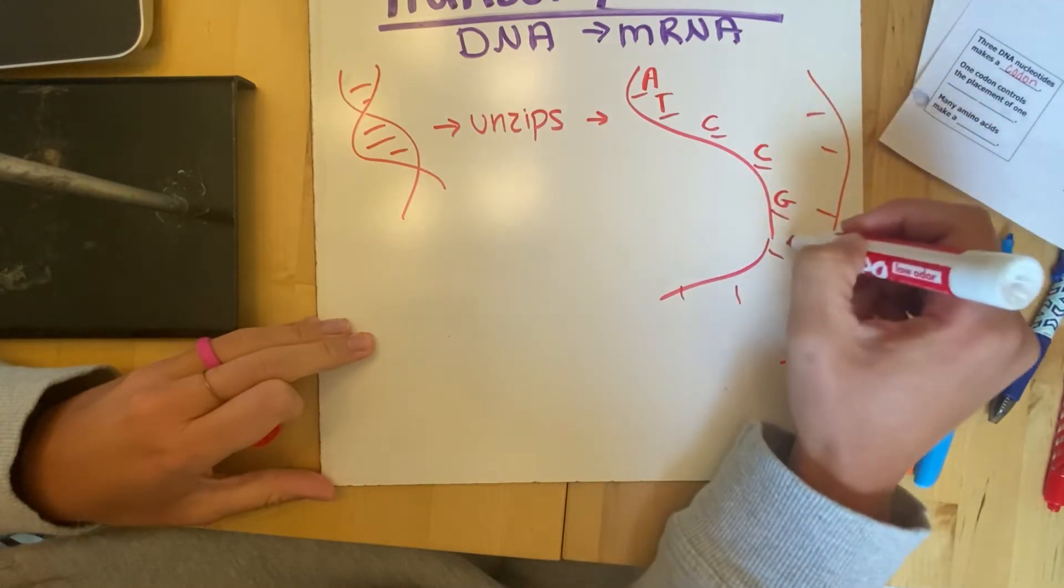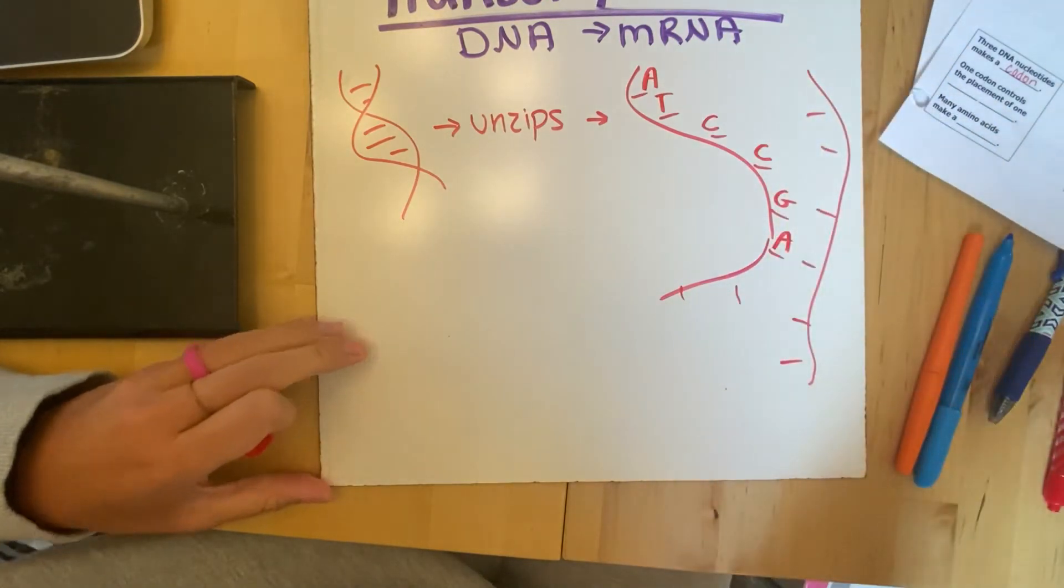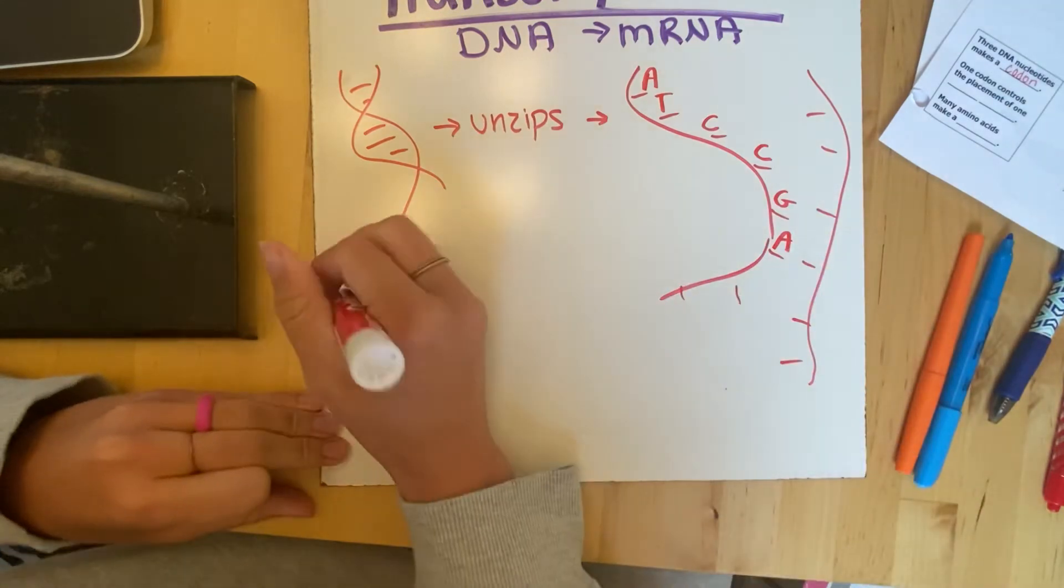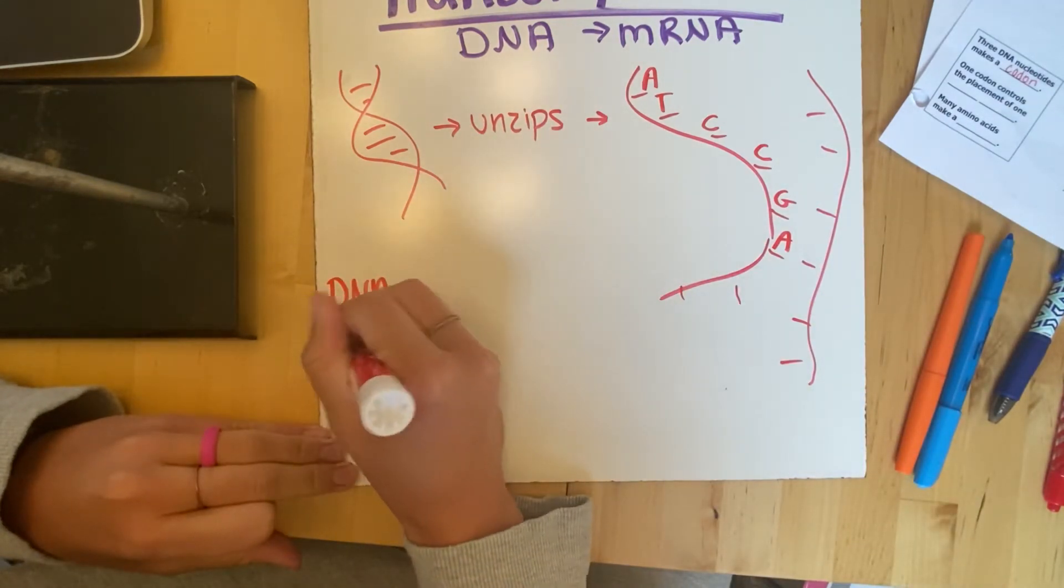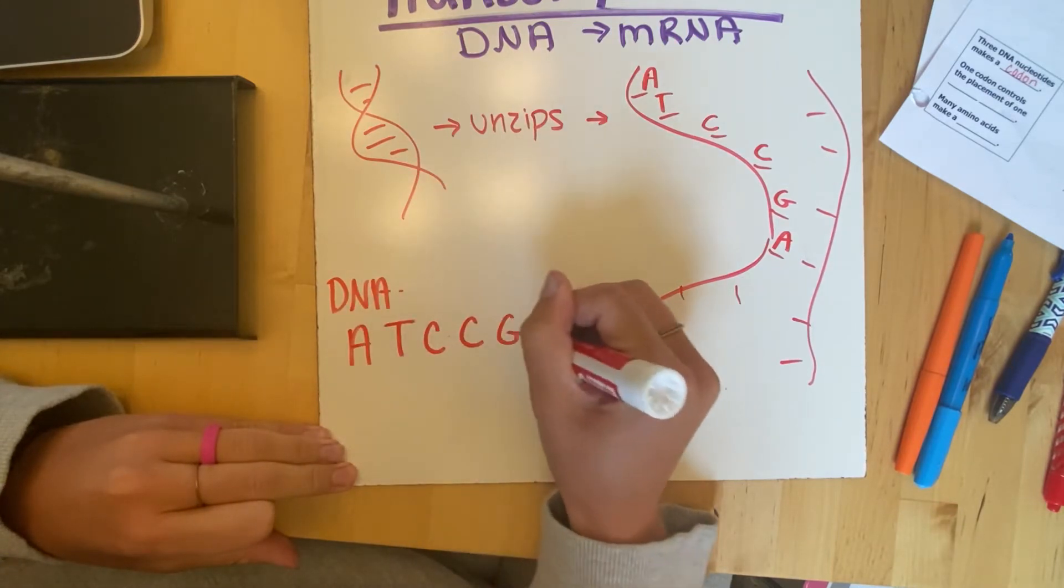So let me get my red back out. If our DNA sequence, I'm going to write it down here, was A, T, C, C, G, A. So let's write it down here: DNA - A, T, C, C, G, A.